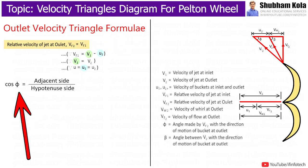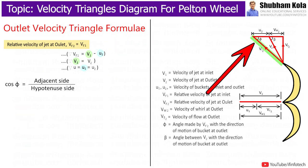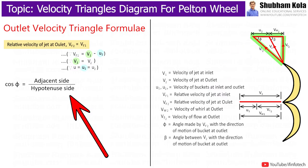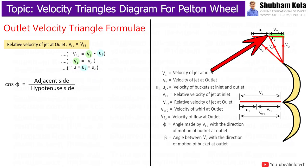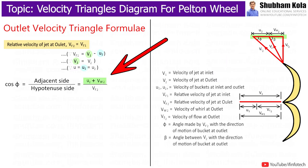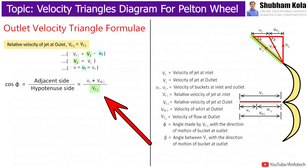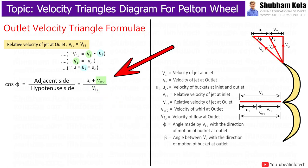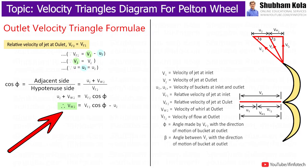Here, phi is the angle made by Vr2 with the direction of motion of the bucket at outlet. From the right-angle triangle, we write cos φ = adjacent/hypotenuse = (U2 + Vw2) / Vr2, where Vw2 is the whirl velocity at outlet. Rearranging, Vw2 = Vr2·cos φ − U2.